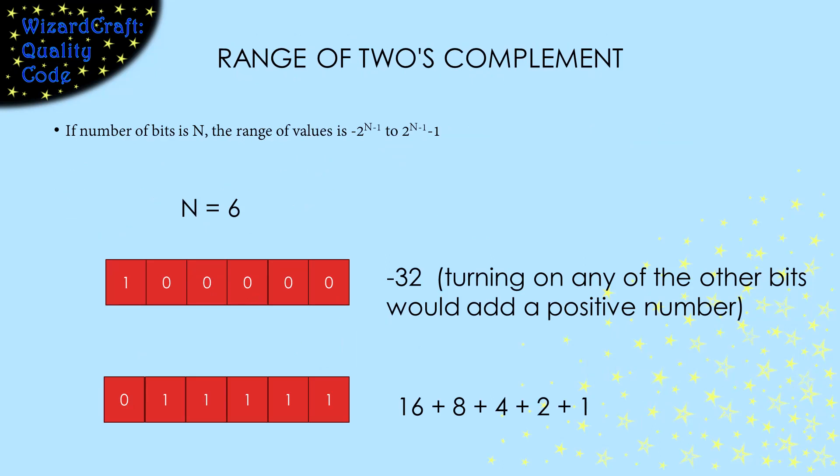Now that we can calculate the value of any number in two's complement, we can see that the most negative number that we can get will only have a 1 in the sign position. Turning any of the other bits on would add a positive number, moving us away from that extreme. In our 6-bit case, that means the smallest number that we can represent is negative 32. The largest number that we can represent has a 0 in the sign bit and all of the rest of the bits 1's. In our case, that gives us 31. So, the range of numbers that we can represent is negative 2 to the n minus 1 to 2 to the n minus 1 minus 1.